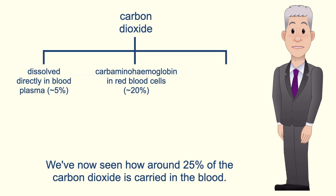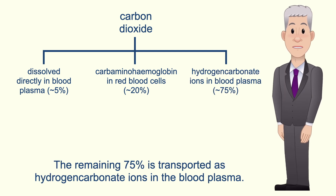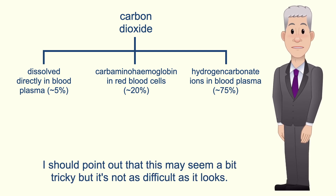So we've now seen how around 25% of the carbon dioxide is carried in the blood. The remaining 75% is transported as hydrogen carbonate ions in the blood plasma. This may seem a bit tricky but it's not as difficult as it looks.